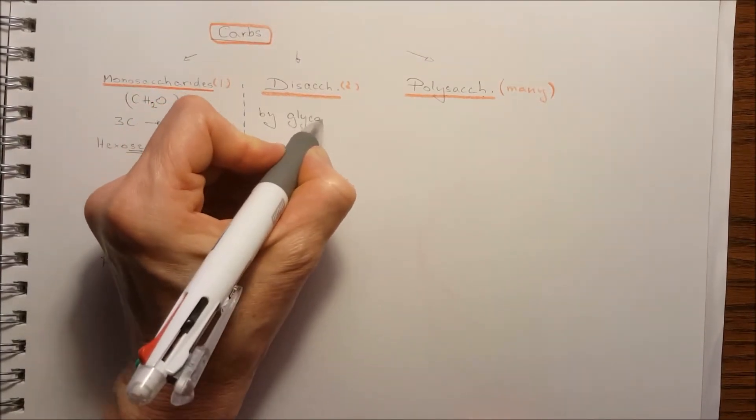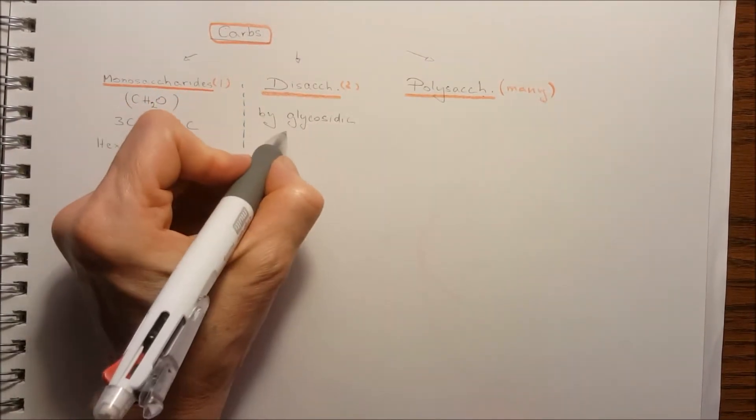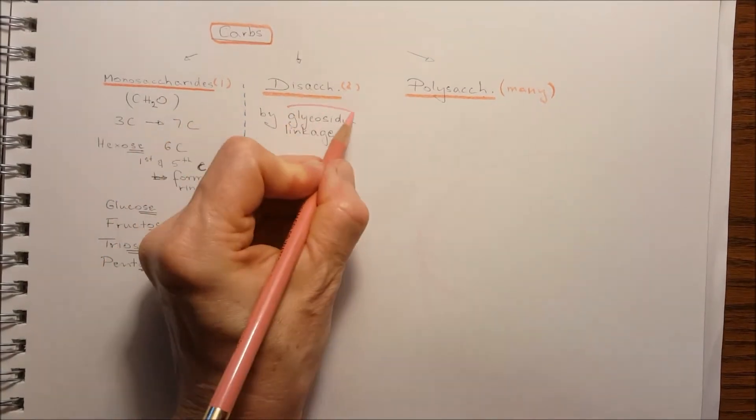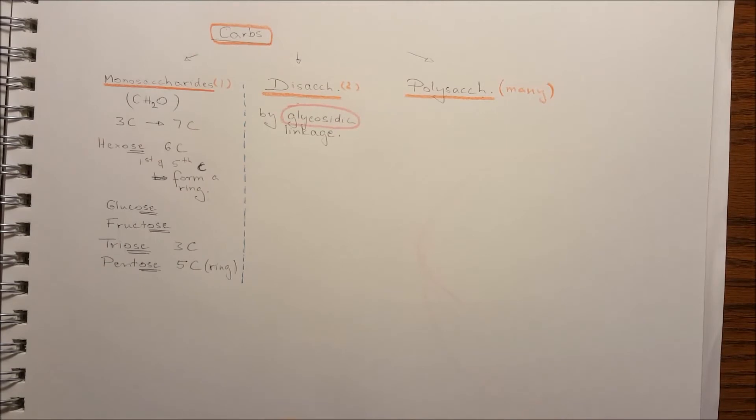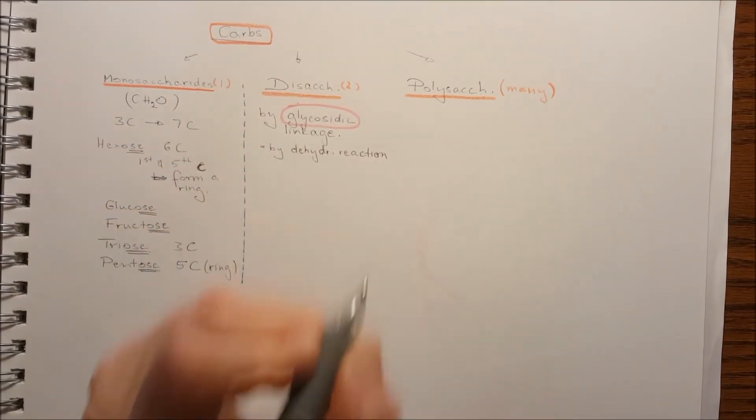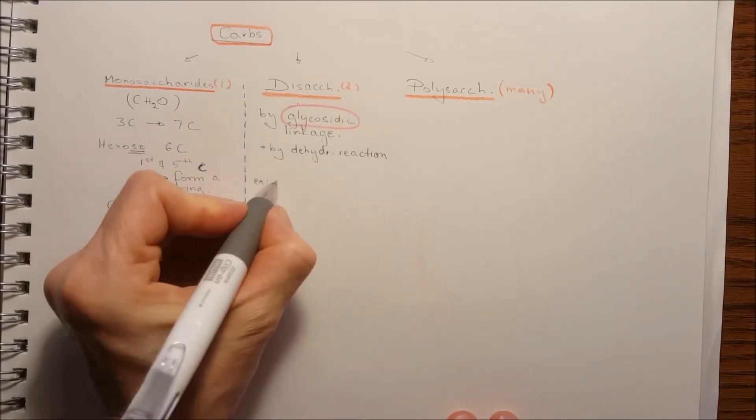Disaccharides, they bind together by glycosidic linkage by dehydration reaction. Dehydration again, the hydroxyl group binds with the hydrogen and leaves the system.